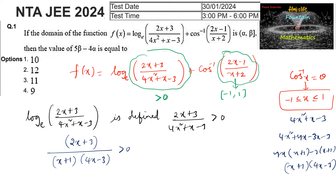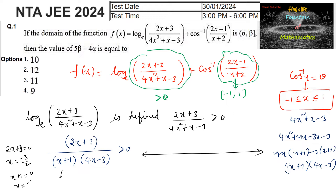So we need (2x + 3)/((x + 1)(4x - 3)) > 0. Using the wavy curve method, mark the critical points where numerator and denominator become zero: 2x + 3 = 0 gives x = -3/2; x + 1 = 0 gives x = -1; 4x - 3 = 0 gives x = 3/4. Mark these points: -3/2, -1, and 3/4.